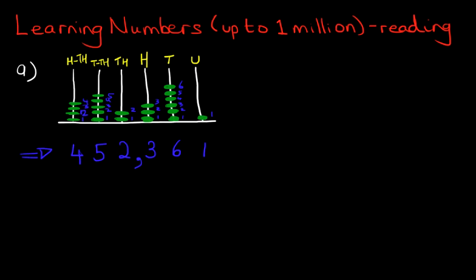How do we say this number? We start on the left and we notice it is hundred thousands. Everything to the left of here is thousands, so this number is thousands. We say four hundred and fifty two thousand — don't forget the thousand bit. So we say four hundred and fifty two thousand, three hundred and sixty one. And it really is as simple as that.